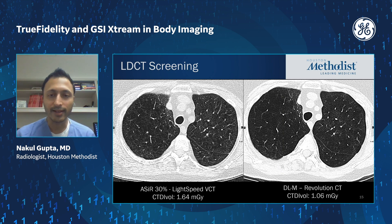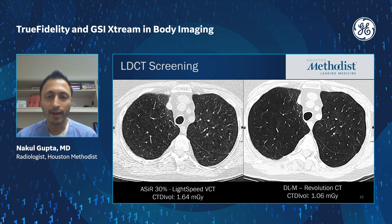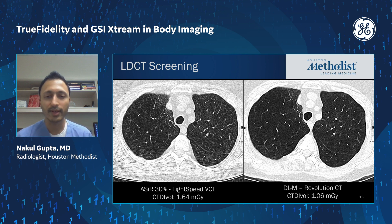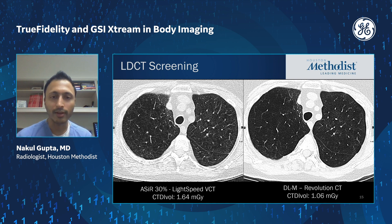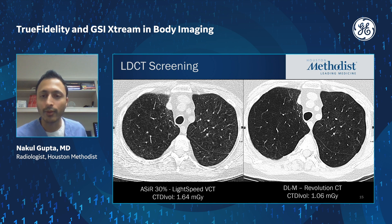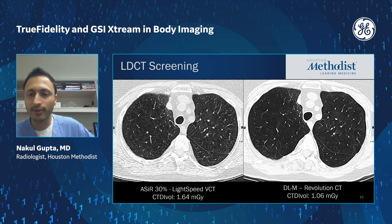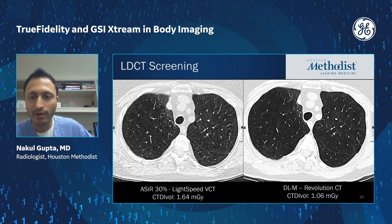Low dose lung screening is another area where we've implemented this with great effect. The previous scan was done on a LightSpeed VCT at 1.6 mGy, with a lot of streak artifacts, particularly in the dependent portion of the lungs, and a fairly high noise level overall. Applying deep learning on the same patient with a CTDI of 1.06 — about two thirds of the previous dose — you get a much cleaner image with less noise, and the streak artifact in the dependent portion of the lungs is almost gone.